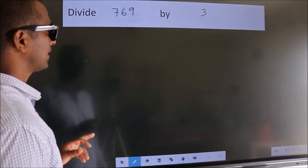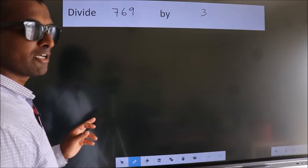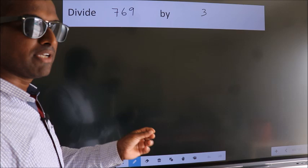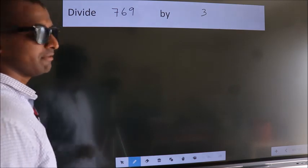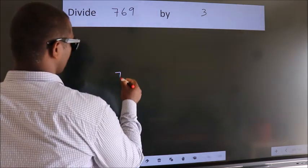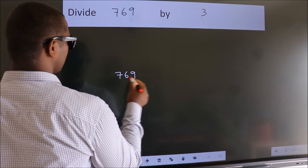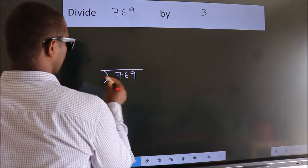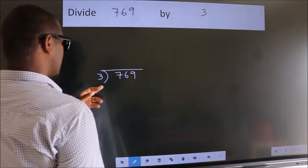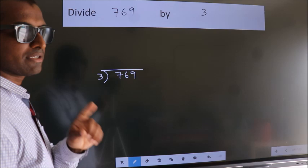Divide 769 by 3. To do this division, we should frame it in this way. 769 here, 3 here. This is your step 1.